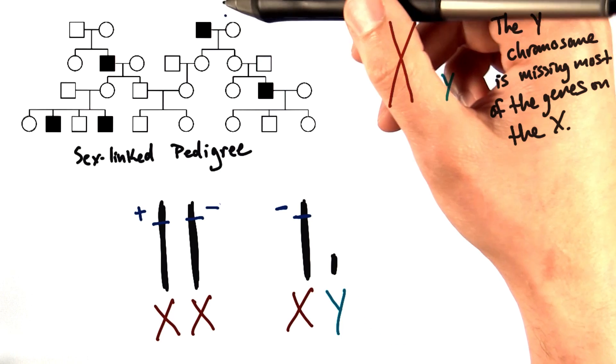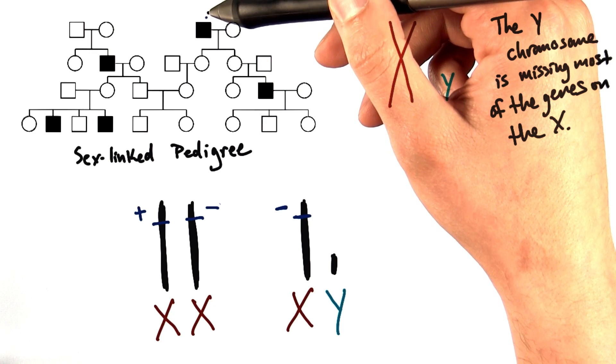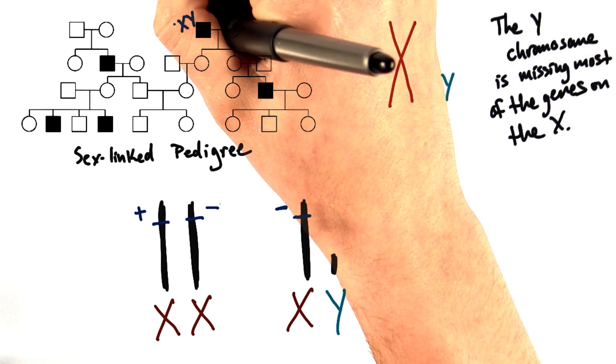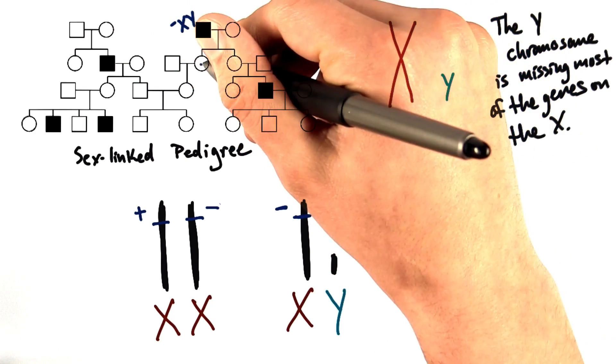So in our pedigree up at the top here, we have an affected great-grandfather. And if he is XY, we know that he has an affected allele. If he has any daughter, he must pass that allele on.